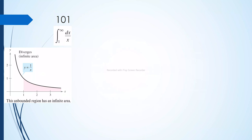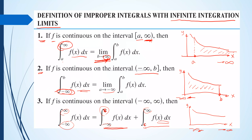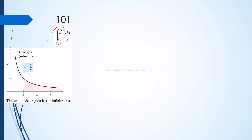Let's start with our first example. Evaluate the integral of dx/x with lower limit 1 and upper limit positive infinity. Which type of improper integral is this? This is the first type — infinite integration limits where f is continuous but the upper limit approaches positive infinity. So we rewrite: the integral of dx/x from 1 to positive infinity equals the limit of the integral of dx/x from 1 to b, as b approaches positive infinity.